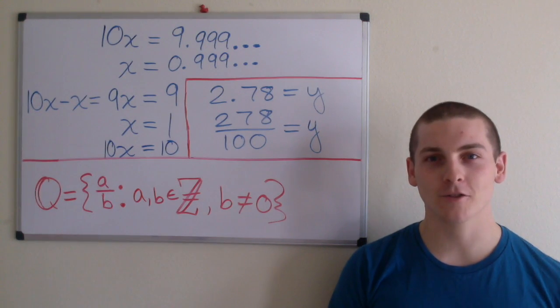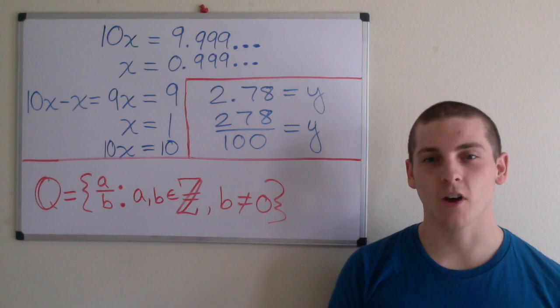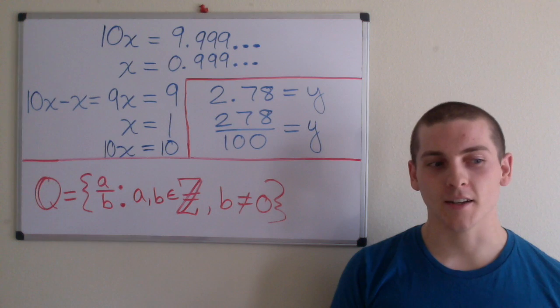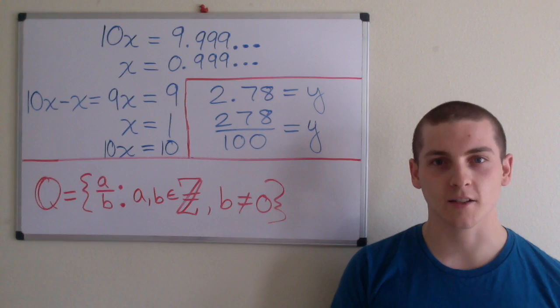In this video, I'll be introducing the rational numbers and set builder notation. The rational numbers are defined as a ratio of two integers, and examples include the integers themselves, terminating decimals, and repeating decimals.